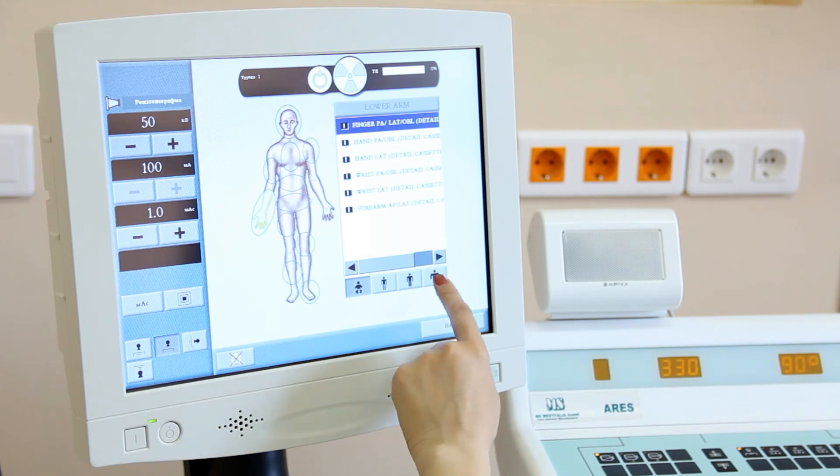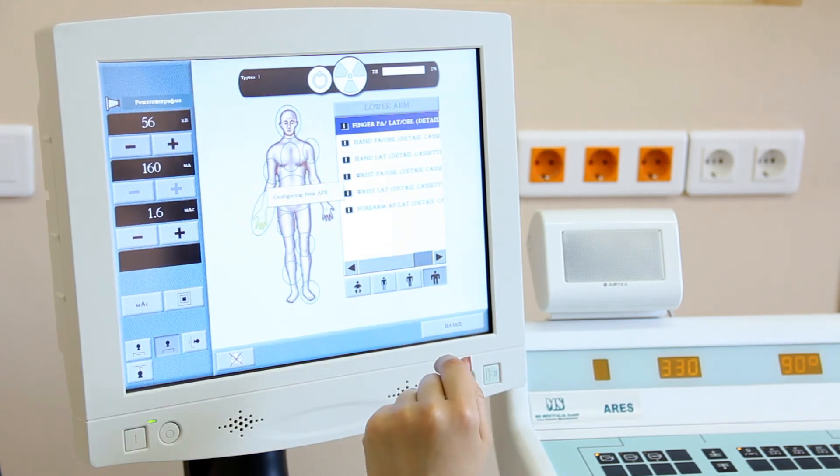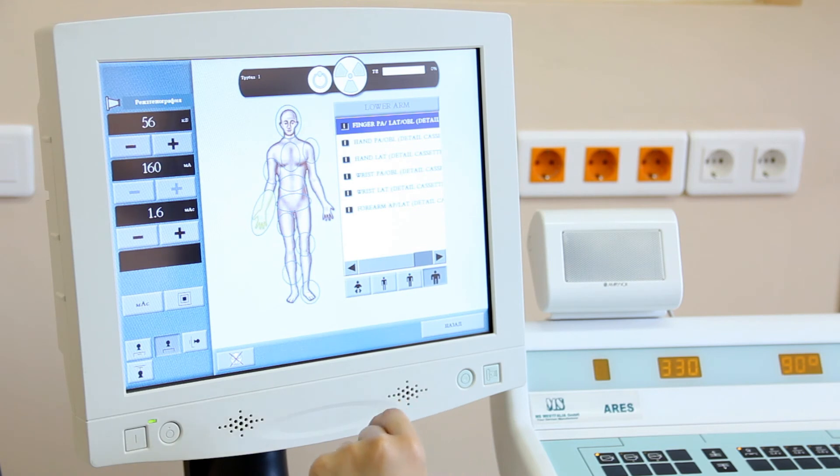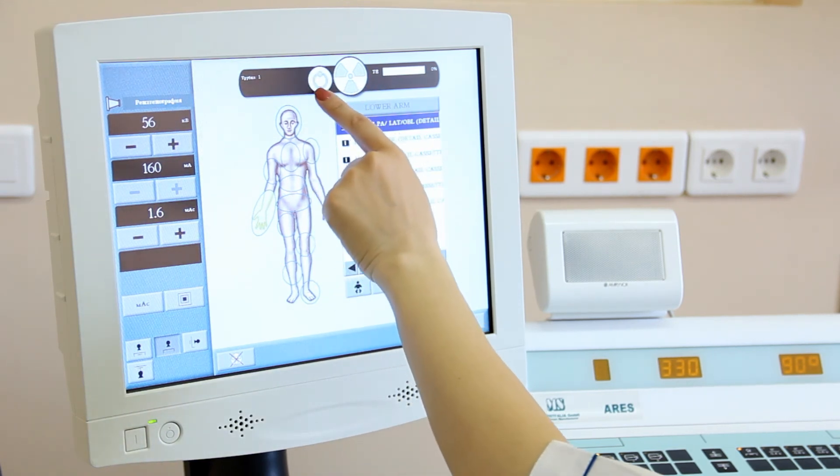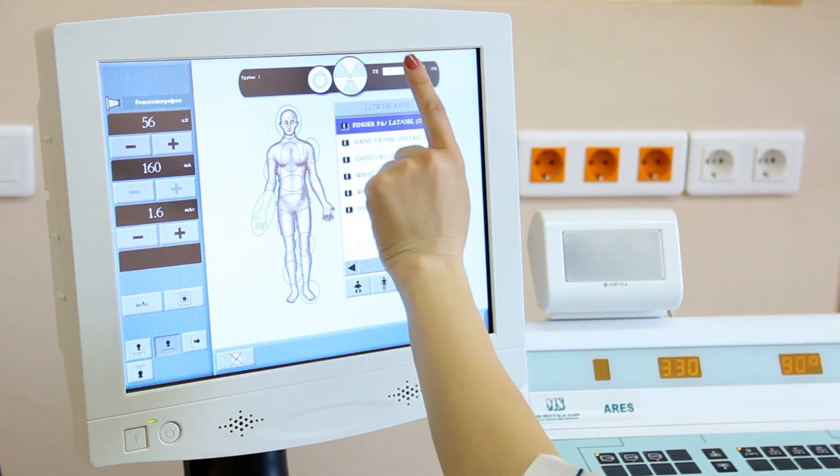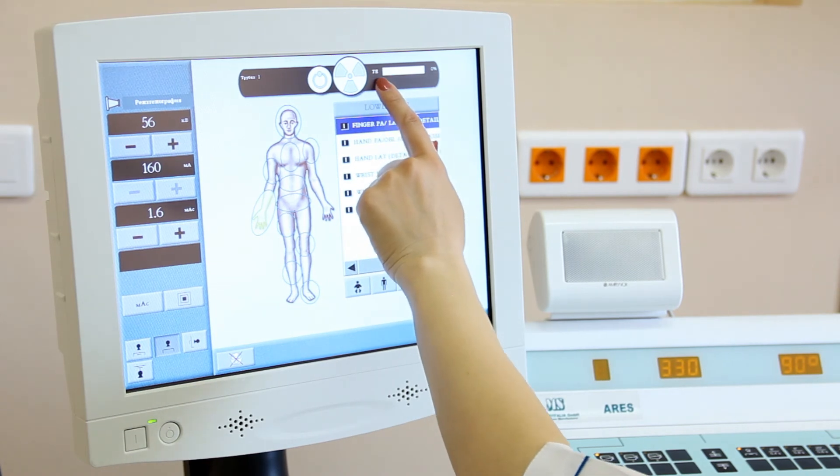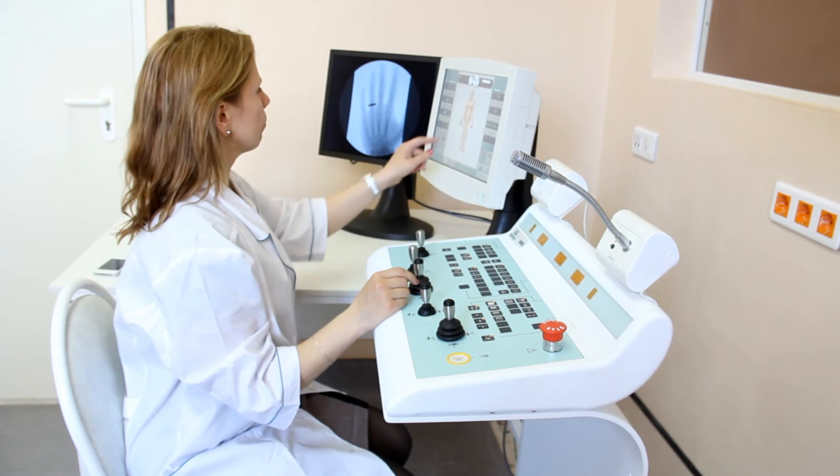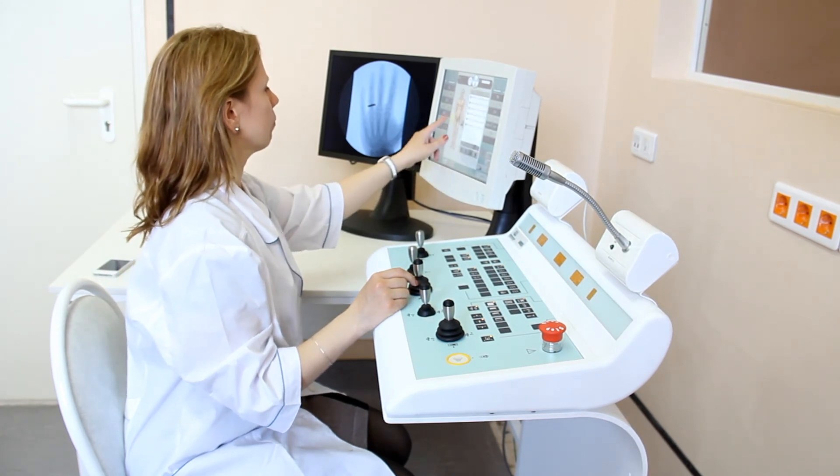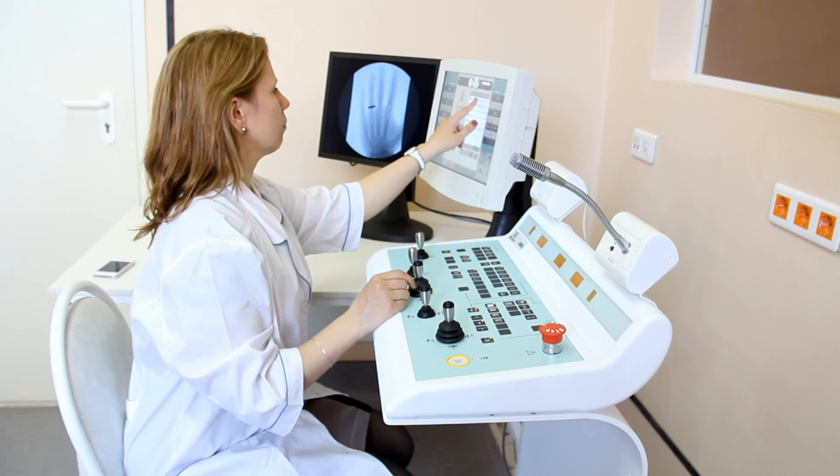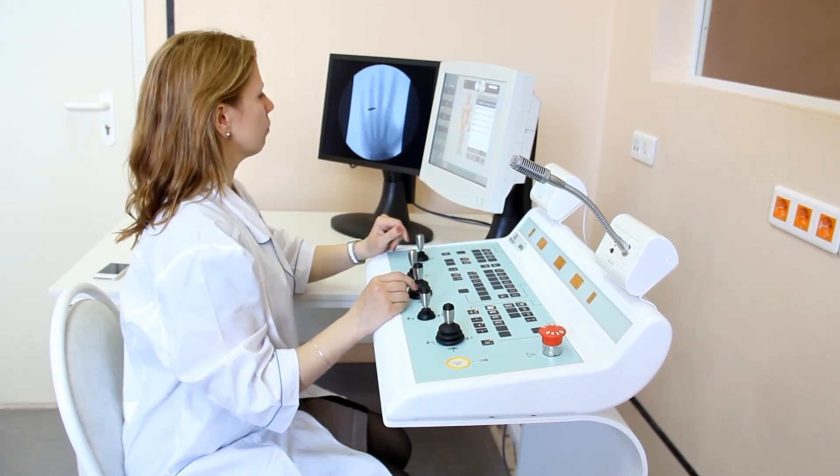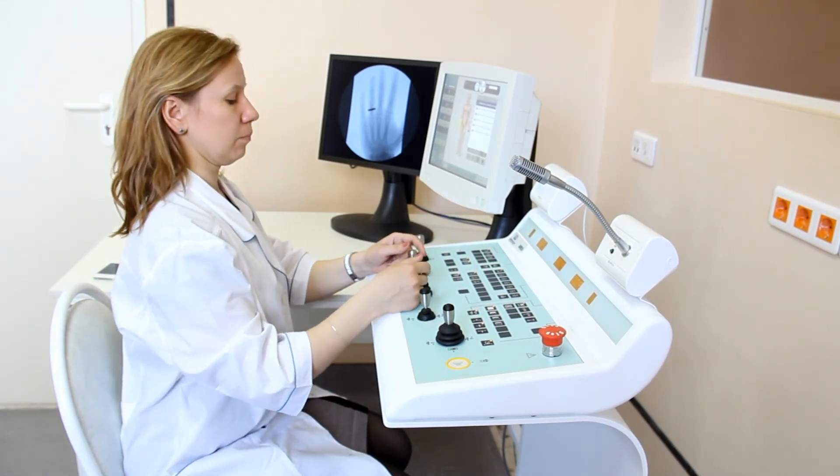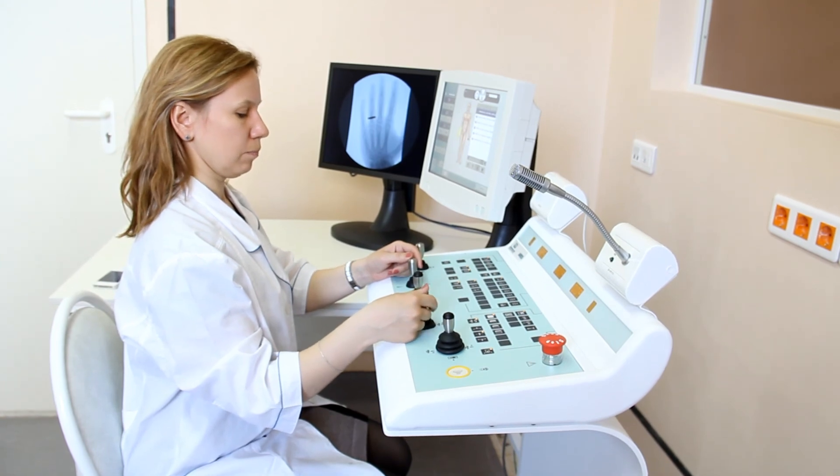The exposure switching parameters and the tube heating level are displayed at the top of the touch screen monitor. The modern modular construction of RSRC with a wide choice of tables, generators, analog and digital video systems and X-ray tubes gives an opportunity to choose any system configuration that would meet individual needs of any hospital.